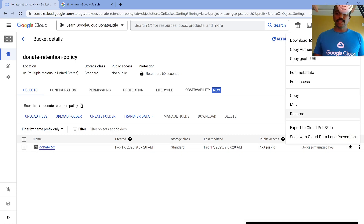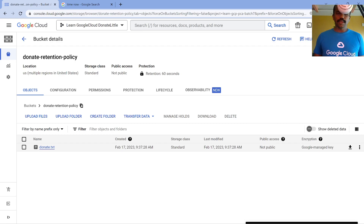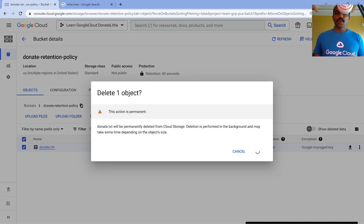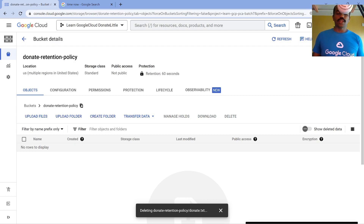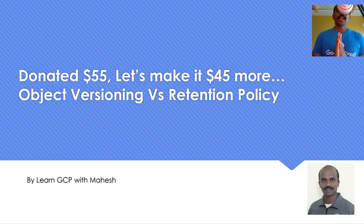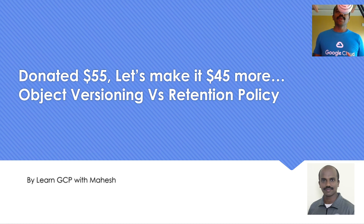Let me try to delete the object now - it should get deleted. Once the object is deleted you should also be able to delete the bucket if you want. If you leave the bucket it won't incur cost since a bucket is just a placeholder. So that's the video: you saw how object versioning and retention policy work, and their differences. Let's try to earn that remaining $45 through this content. Hope you liked the video - thank you for watching, bye!